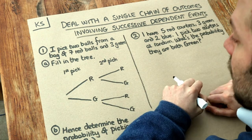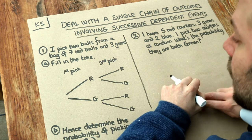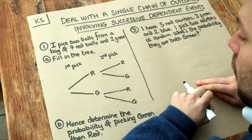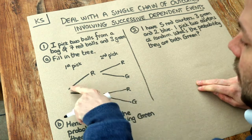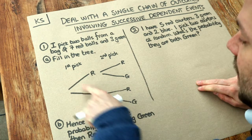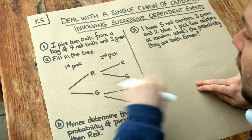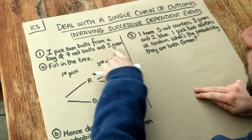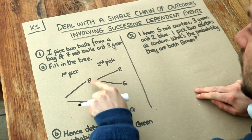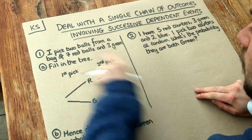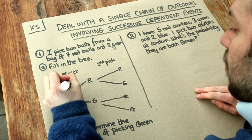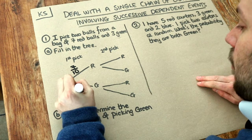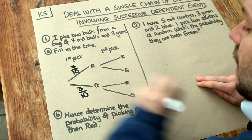So we want to fill in this probability tree first. On the first pick we could either get a red or green ball. We put the probabilities on these branches. The probability of getting red on the first pick is seven tenths, since we've got ten balls in total and seven are red. The probability of getting green is three tenths, since three out of ten balls are green.